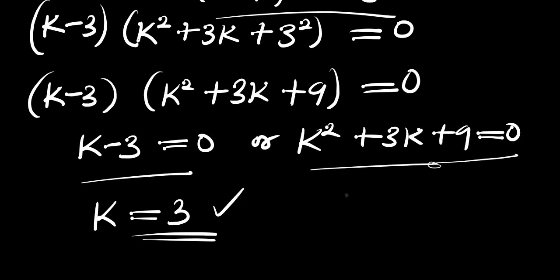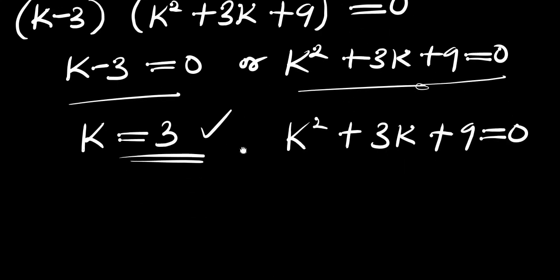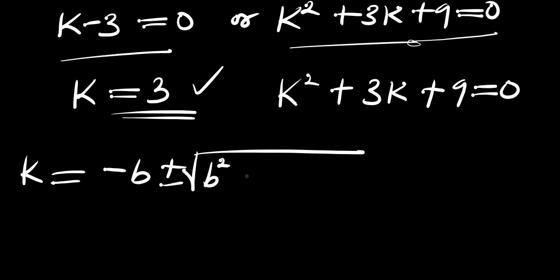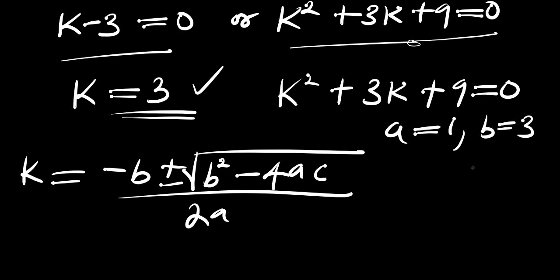Now let's solve this quadratic equation. We have k squared plus 3k plus 9 equals 0. We are going to use the formula method. We have k equals negative b plus or minus the square root of b squared minus 4ac, divided by 2a. From here we have a equals 1, b equals 3, and c equals 9.